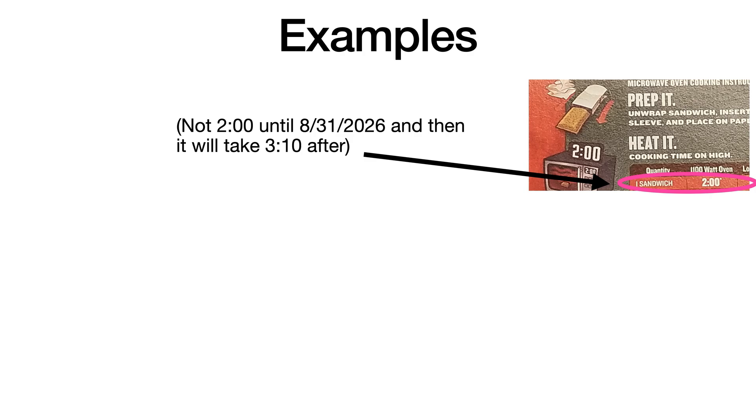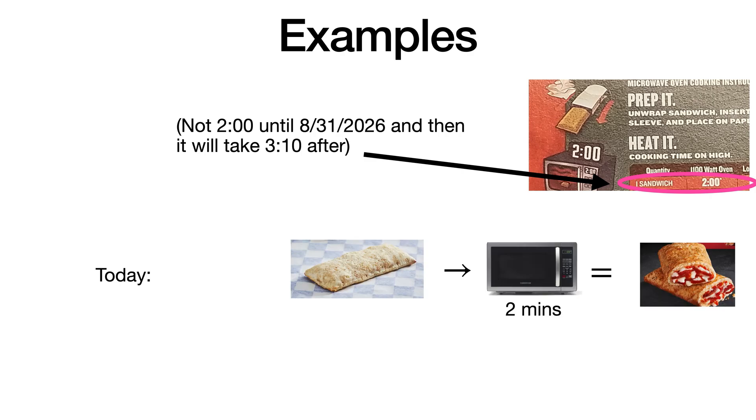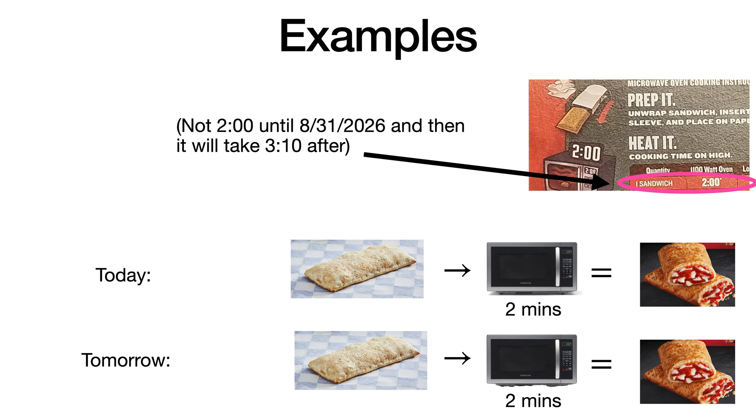Time invariance is often a useful property for systems to have because it means we can apply observations we make from a system to other situations we have not observed. So whether I put in this hot pocket today or tomorrow, I get the same result.